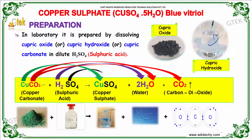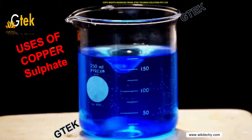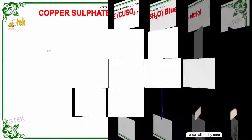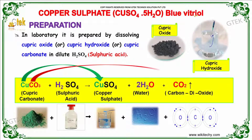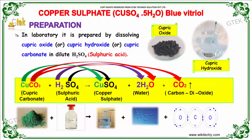In the laboratory, copper sulfate is prepared by dissolving cupric oxide, cupric hydroxide, or cupric carbonate in dilute sulfuric acid. This reaction gives you copper sulfate, water, and carbon dioxide.